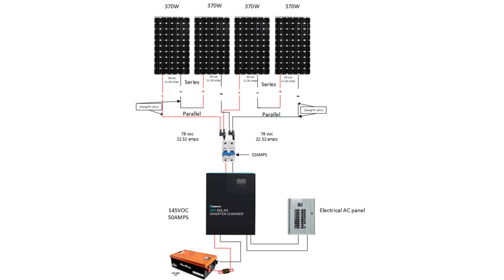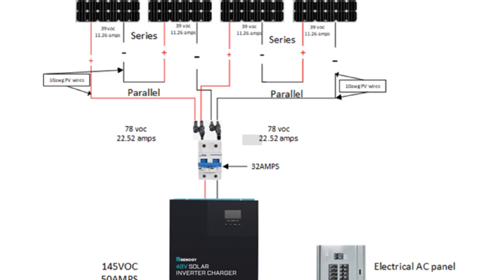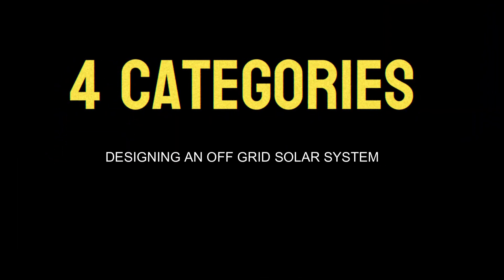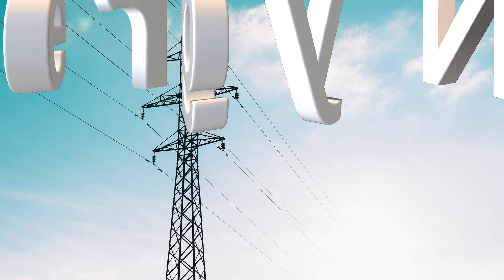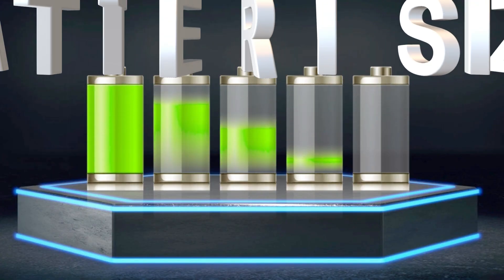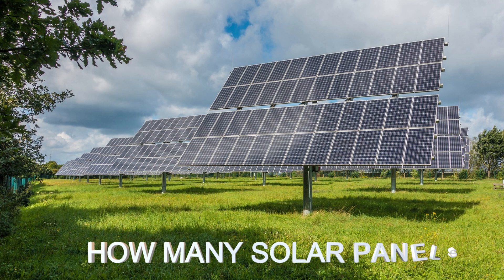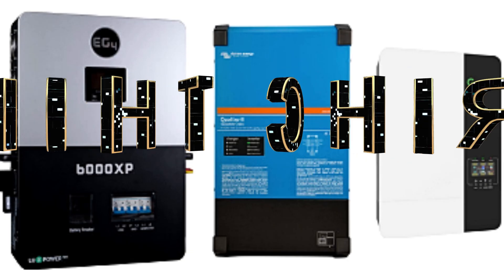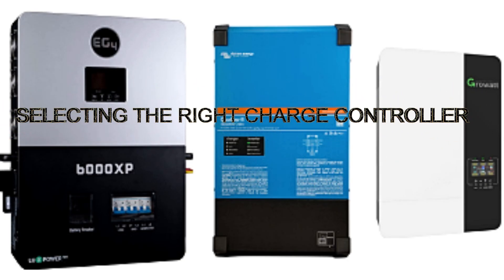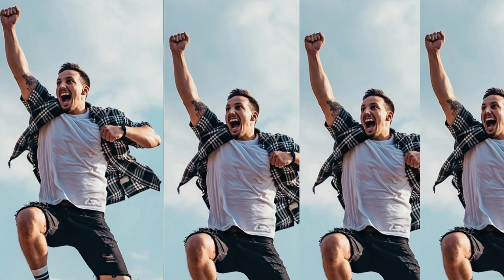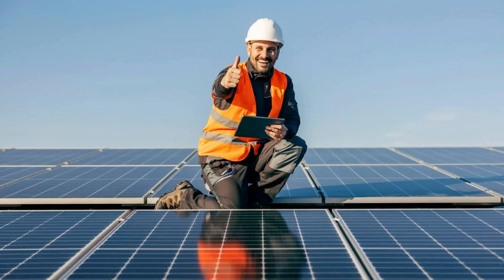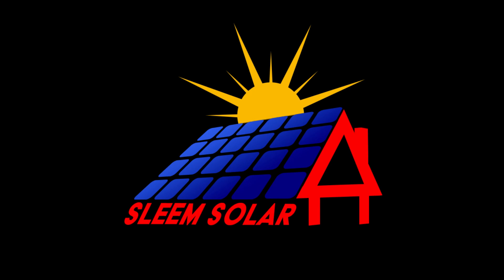And that's what it takes to size an off-grid solar system — pretty straightforward. In conclusion, let's recap the four categories: first, finding your daily energy needs; second, calculating battery bank size; third, how many solar panels are needed; and fourth, selecting your charge controller. If you found value in this information and it can help you toward designing your system, please smash that like button, share, and subscribe to this channel. Thank you for watching, and until the next video, take care.